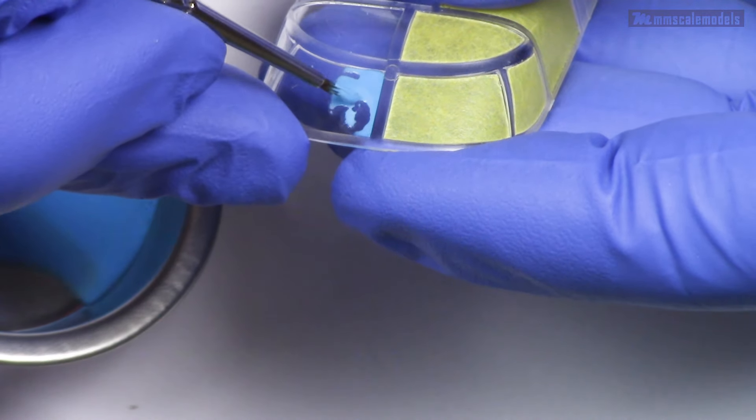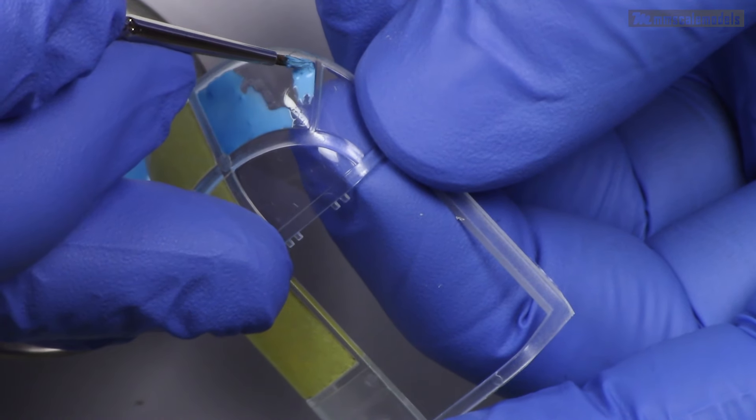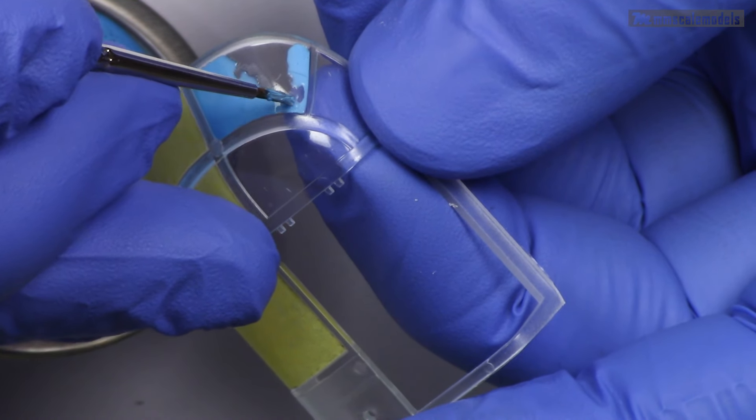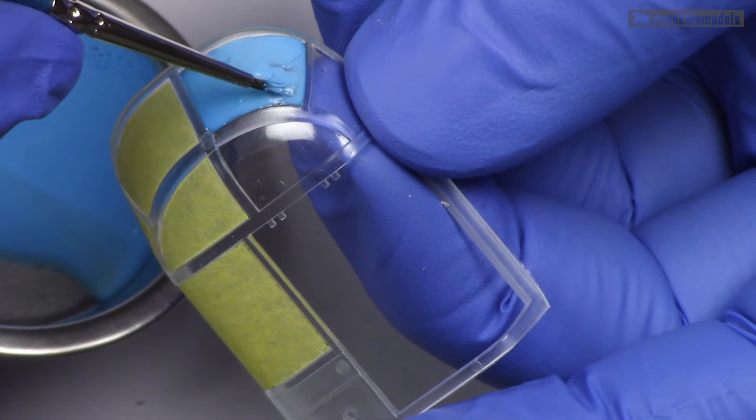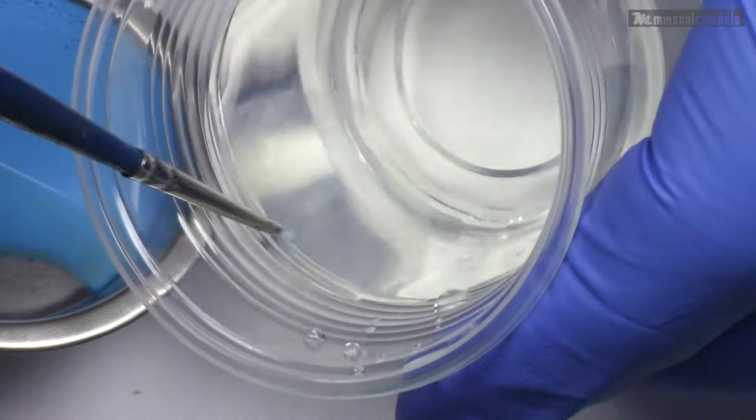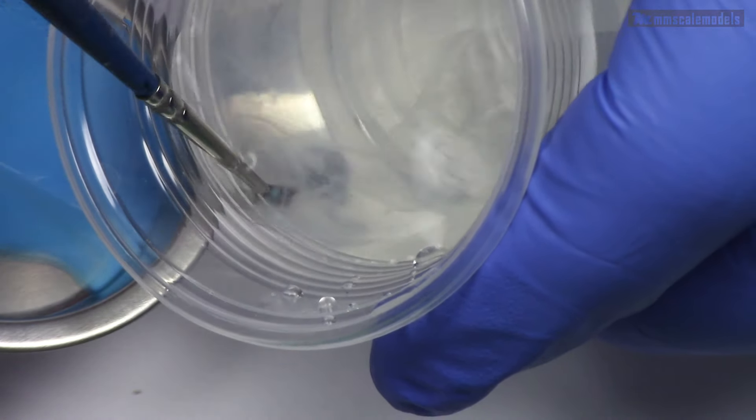The masking liquid needs time to cure, so this might be perceived as a disadvantage. Frequent brush cleaning with water is necessary because otherwise the mask will dry on the brush and will be much harder to remove. In my experience, acetone works for removing dried masking liquid from the brush.